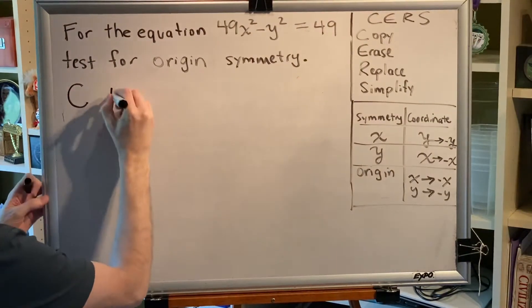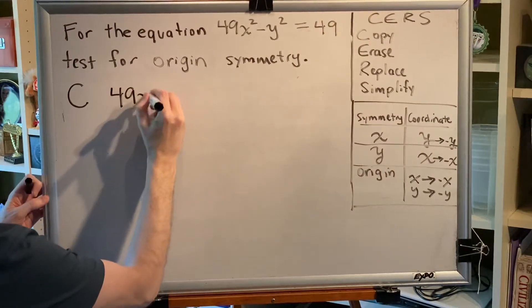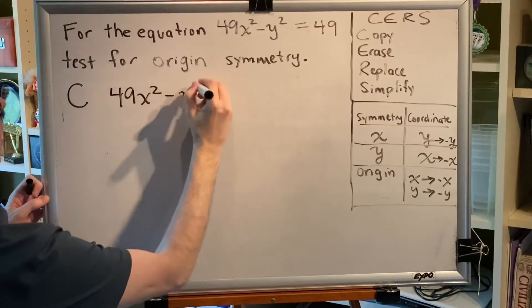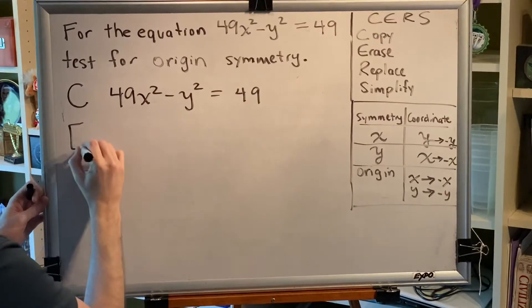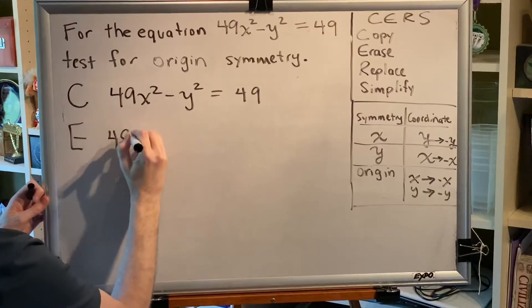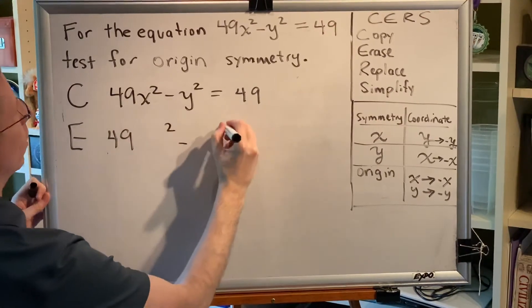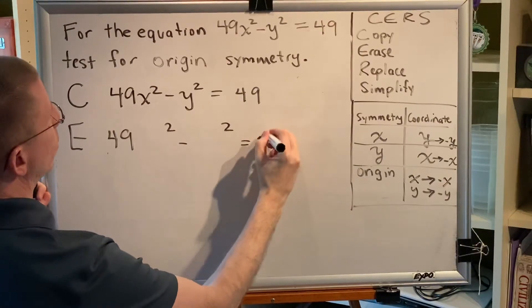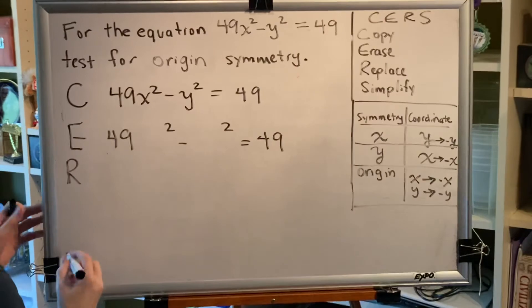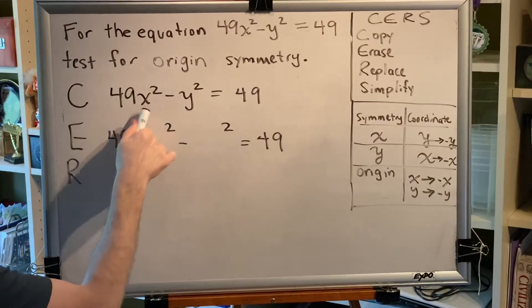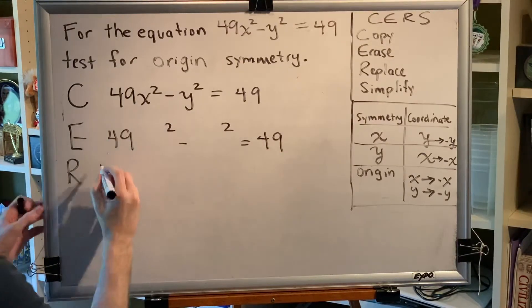So first, copy: 49x squared minus y squared equals 49. Next, erase. Everywhere you see an x or a y, erase it. Do not erase anything before it, after it, or above it. So when you erase the x and the y, this is what you get.